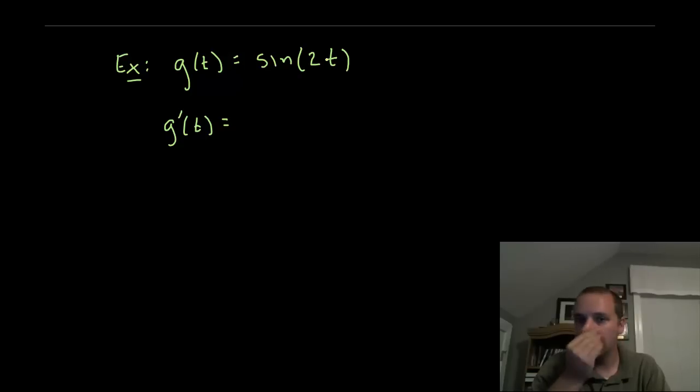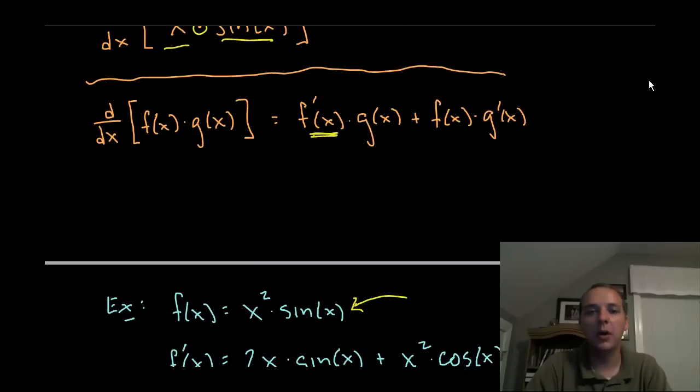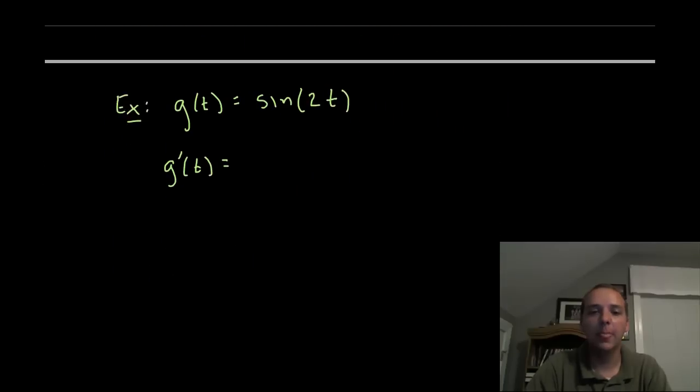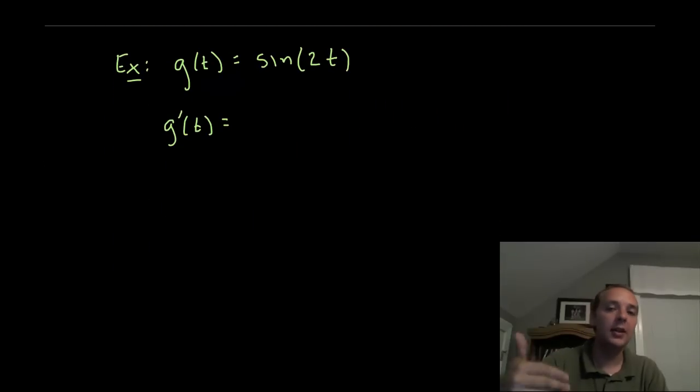Now there is a product here but that doesn't really matter because it's inside the sine first of all and second of all 2 is a multiple of t, it's not a true product. Normally when we say product rule we mean a function of one variable times a function of another variable. So what do we do? Well if you've looked ahead at some later videos the most applicable rule for this one is actually something called the chain rule.